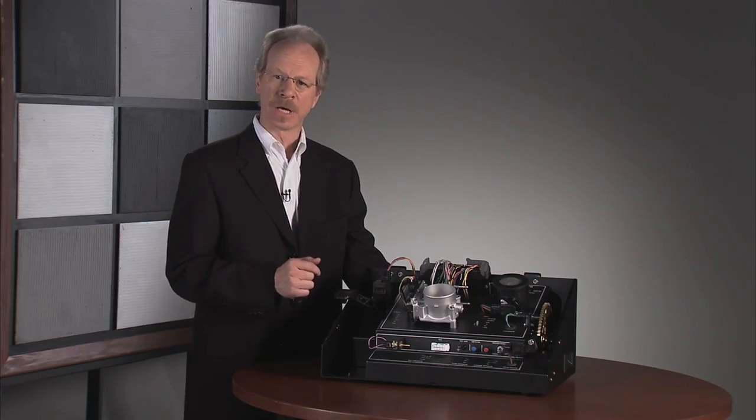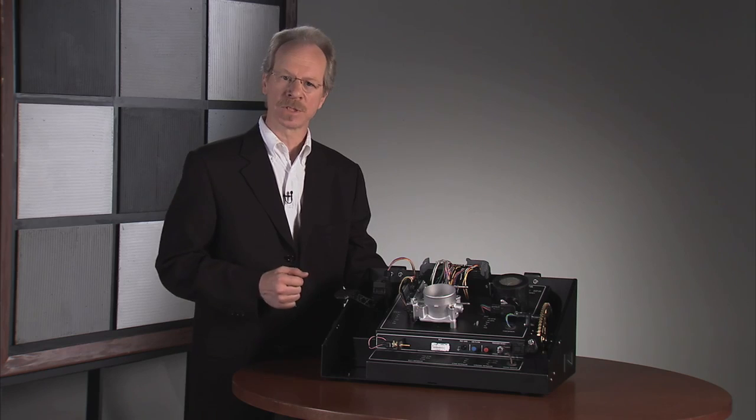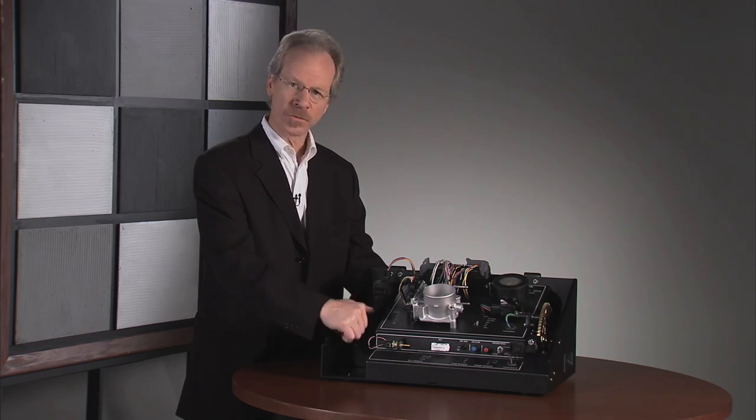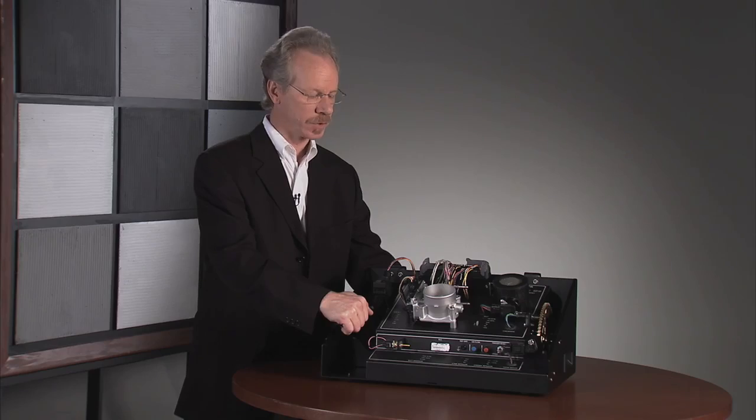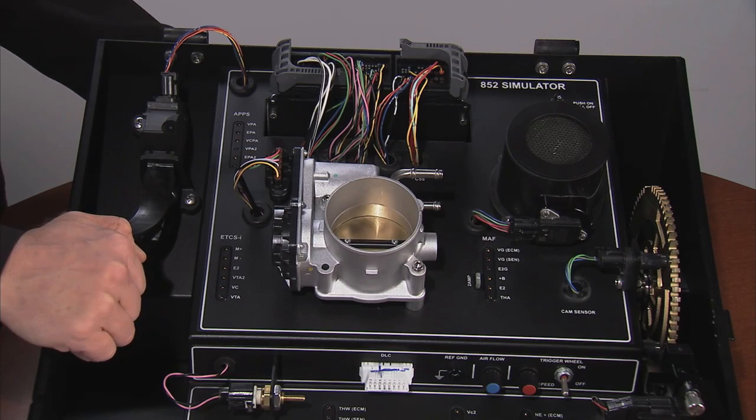The system can even detect interference that comes from outside of the vehicle. If the throttle motor sees a voltage that did not come from the engine control module, the entire engine is shut off.